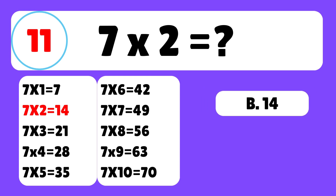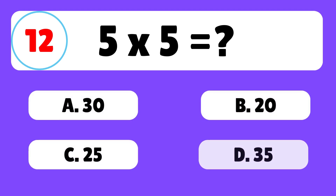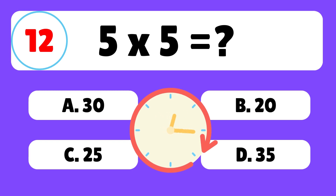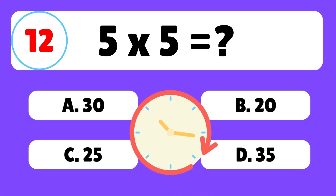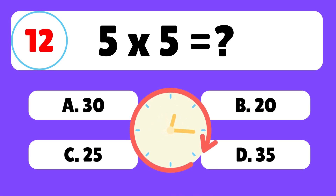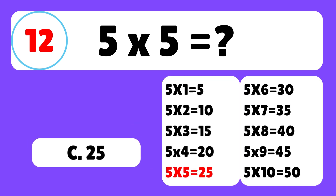Question 12. What is 5 times 5? The answer is C. 5 times 5 is equal to 25.